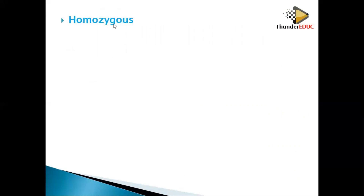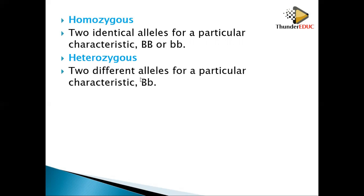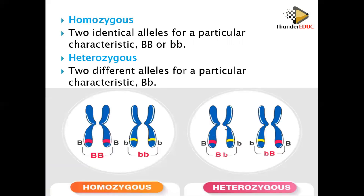Homozygous means the zygote has two identical alleles for a particular characteristic — it can be homozygous dominant or homozygous recessive. Heterozygous means the zygote has different alleles, such as capital B and small b. On a diagram, homozygous alleles are placed at the same locus on both chromosomes, while heterozygous shows same location but different alleles. For heterozygous we do not say dominant or recessive — we just say heterozygous.